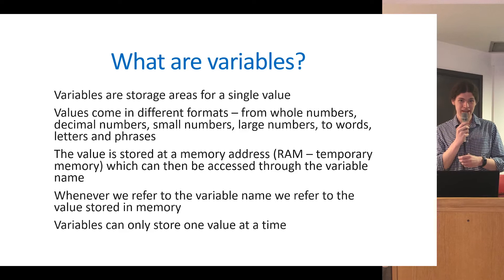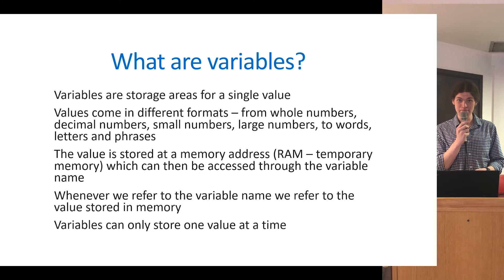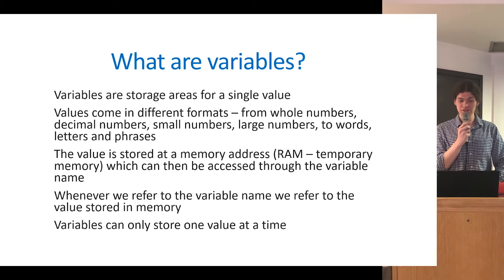What are variables? Variables are storage areas for a single value — they can only hold one value at a time. As the name implies, the value can change, just like a variable in a science experiment. We may update the value stored at a particular location throughout our programs, but if we update it, we overwrite the previous value. Variables come in lots of different formats and can store different types of data: whole numbers (integers), decimal values, words, phrases, letters, and symbols.